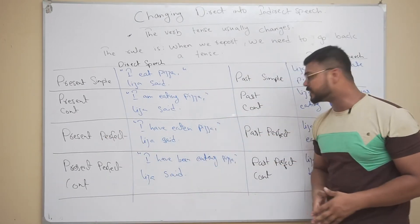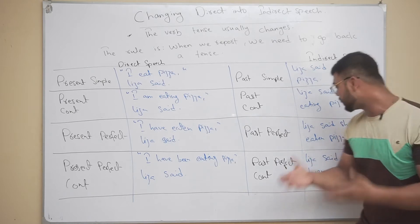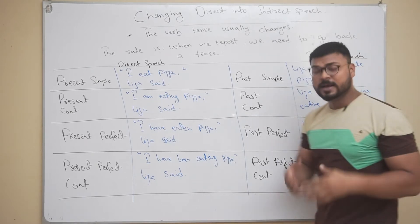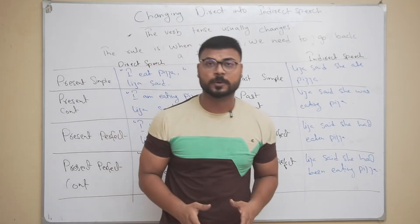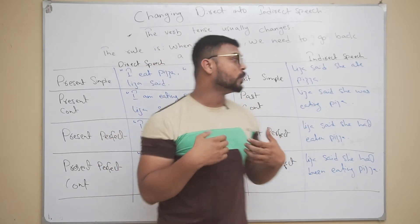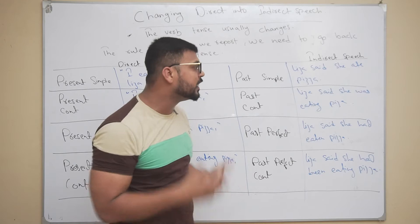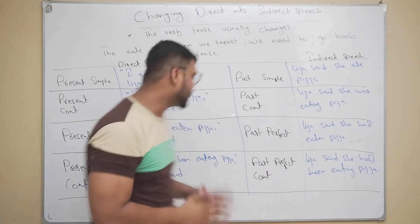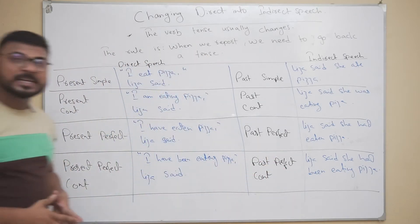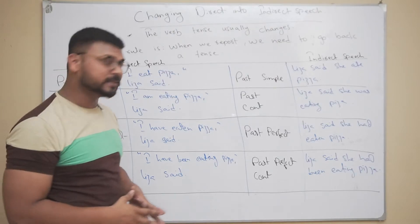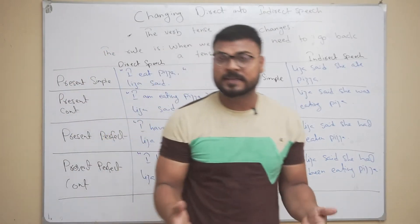For present perfect: 'I have eaten pizza,' Lisa said. In indirect speech, it becomes: Lisa said that she had eaten pizza. Note that 'that' is optional — you can say 'Lisa said that' or just 'Lisa said.' For present perfect continuous: 'I have been eating pizza,' Lisa said — becomes: Lisa said she had been eating pizza.